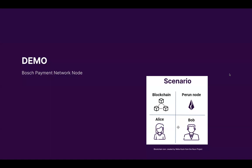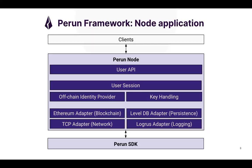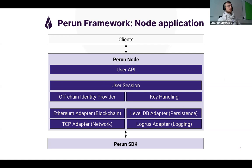Greg is asking why LevelDB is used rather than CouchDB. LevelDB was the first implementation we tried, but we have a very modular approach using dependency injection by which you could use any database backend. We have an abstraction using a key-value store, and CouchDB is also a key-value store, so we could integrate it within a day or two. LevelDB is really just one example implementation — we could integrate CouchDB within a matter of a few days.